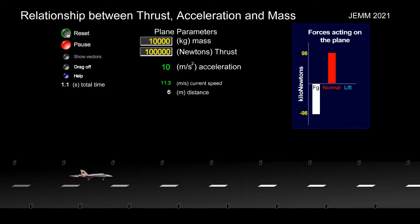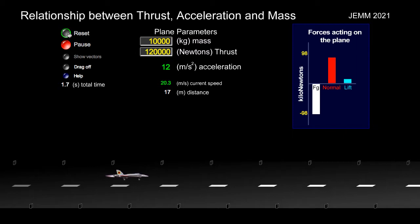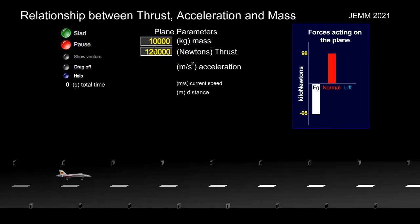The first acceleration of the plane down the runway is 10 meters per second per second. We'll dial in our next force: 120,000 newtons. The acceleration has increased as we've increased the thrust force — now it's 12. With 140,000 newtons of thrust, the acceleration is 14.